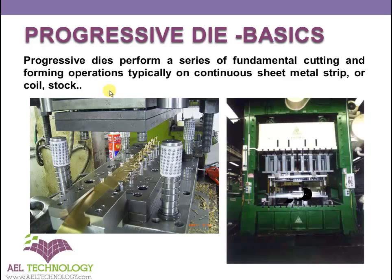As the stock advances through the die stations, unwanted material is cut out leaving one or more tabs, ribbons, or bridges to connect the partially completed part to the strip until completion.